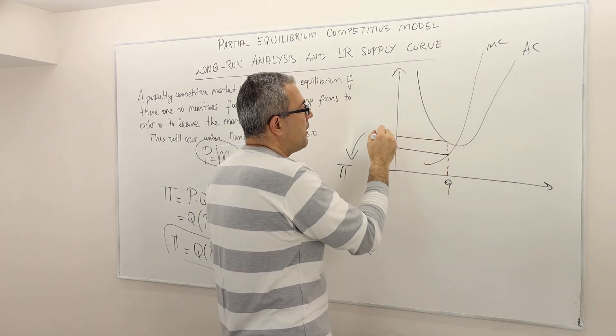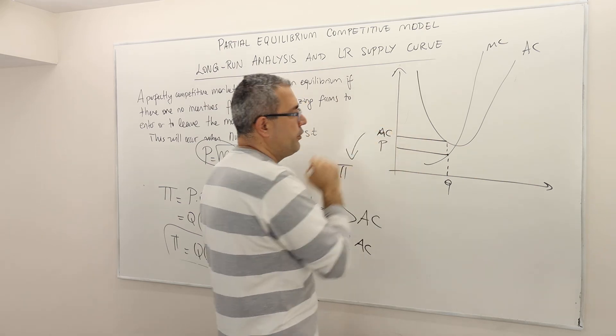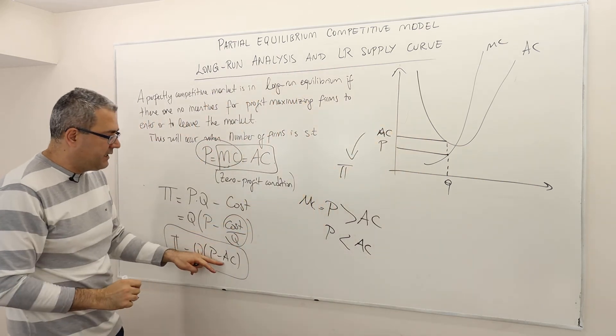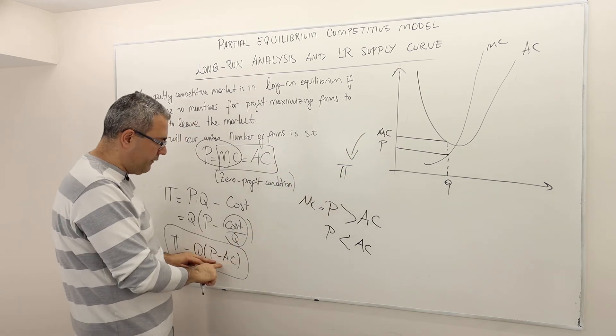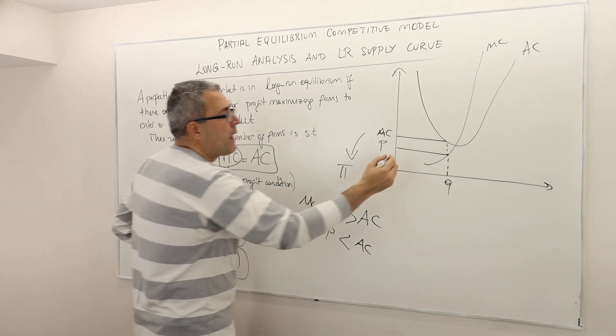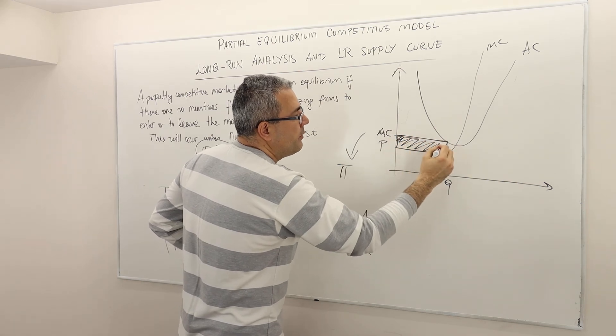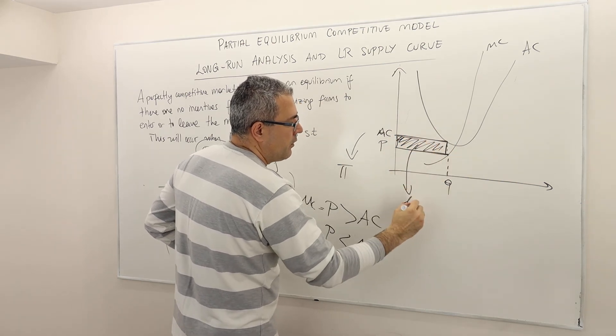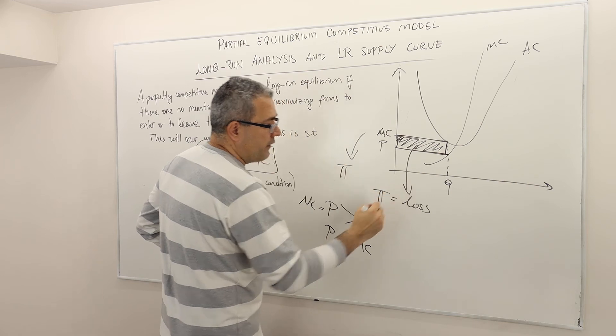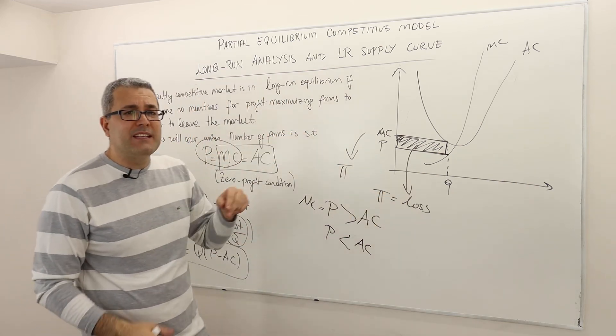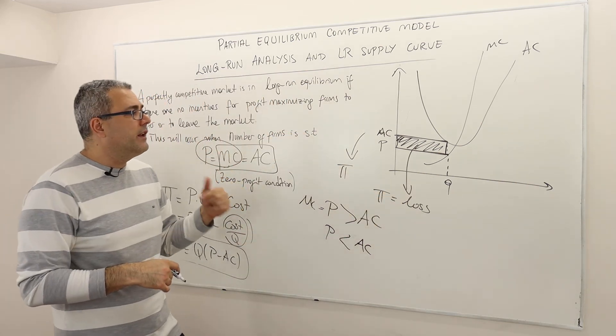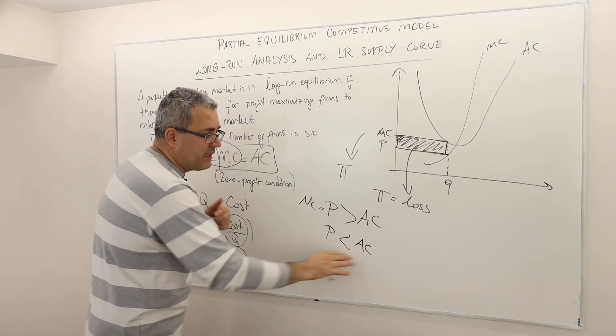This is the margin of average cost of producing. So P minus AC, but this time AC is bigger, so therefore this is going to be negative, but I still multiply it by Q. So this is going to be loss. So the firm makes negative profit. So therefore, if P is less than AC, some firms have incentive to exit this firm.